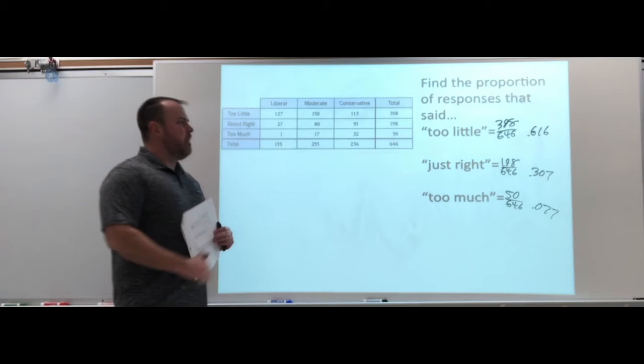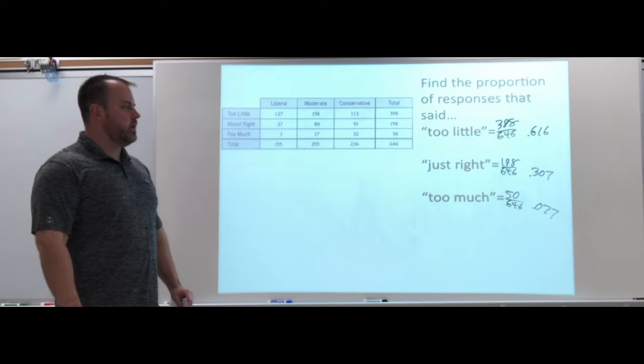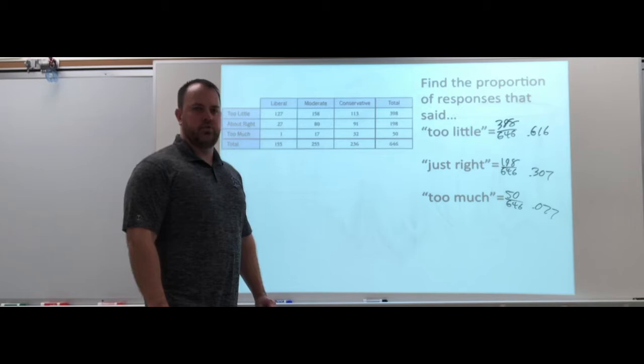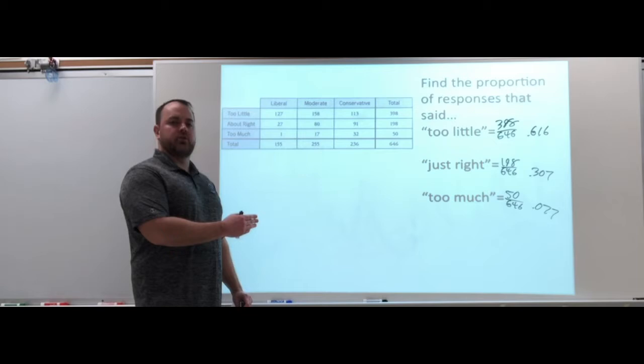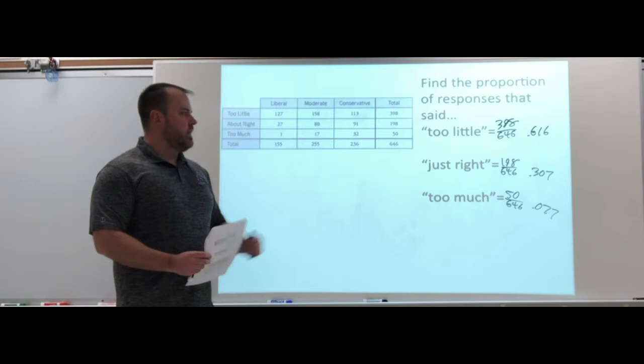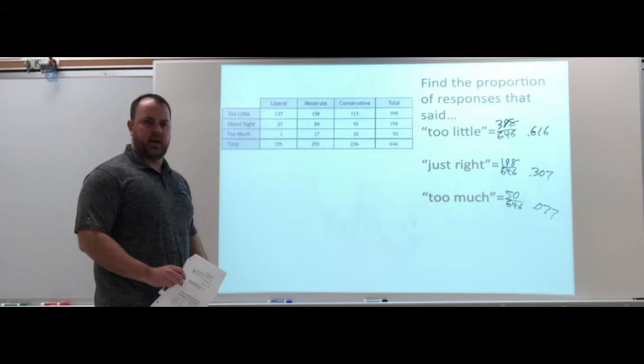You can see well over half say too little. About 30-31% say just right, and less than 10% are saying too much. Now what you need to be careful about is we have three different categories for our explanatory. Are those categories equal? Are they broken up equally? So we're looking at just the responses, not even thinking about which category of the explanatory they fall in. But that's how all of our responses fell.